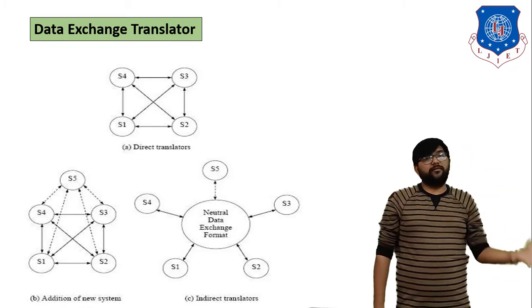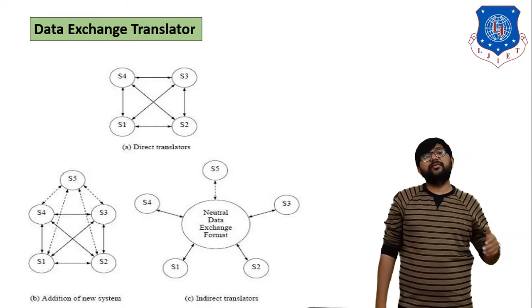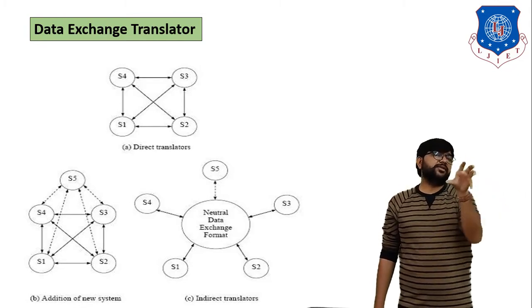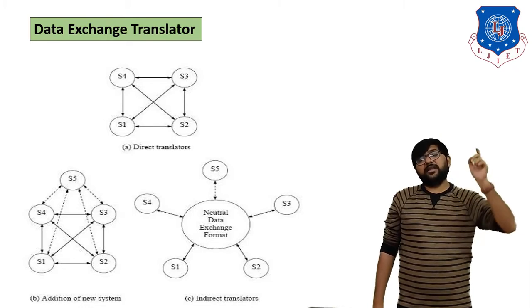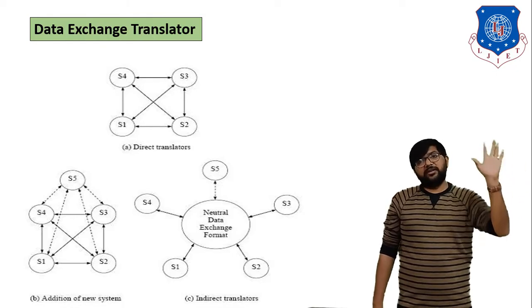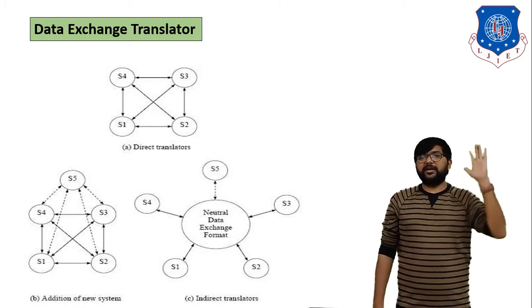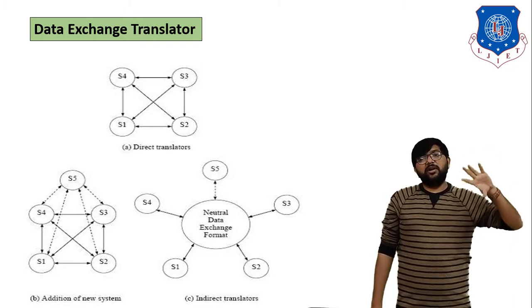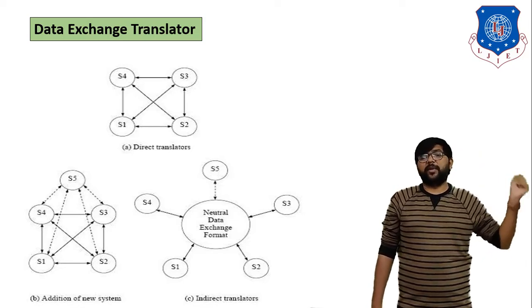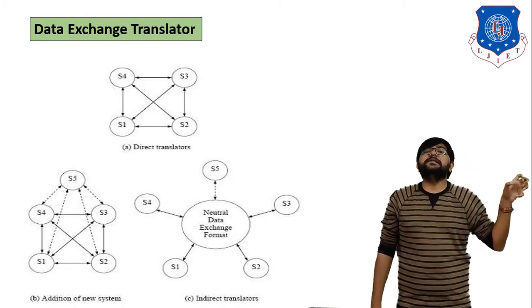Now if you want to add one more system, as shown in figure B, there are a total of five systems. You have to connect all five systems with each other — S1 connected with S2, S3, S4, and S5; S2 also connected with the other four; S3 connected with the other four, and so on. When all five systems are connected with each other, you can transfer data from S1 to S5, S1 to S4, or S4 to S3 — any combination is possible.